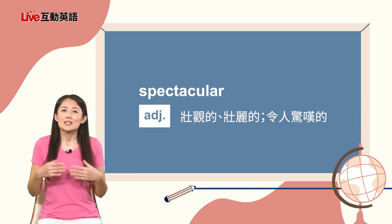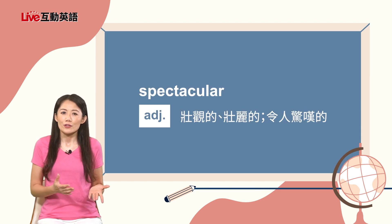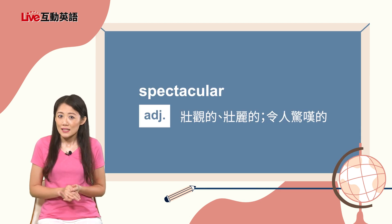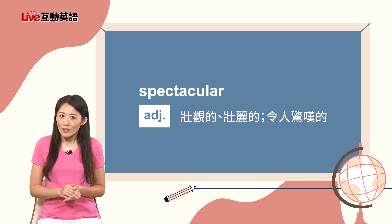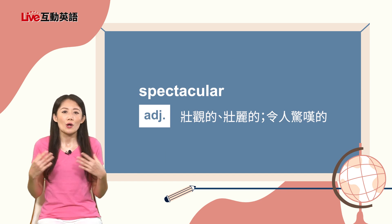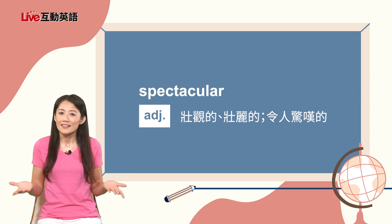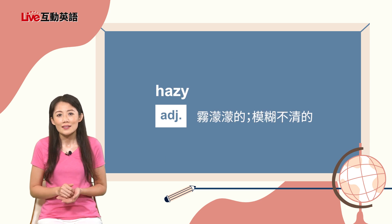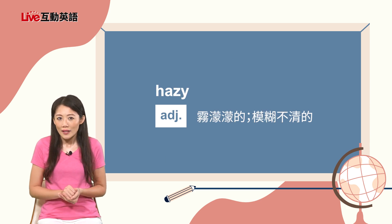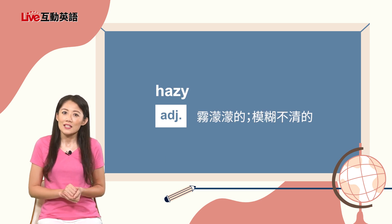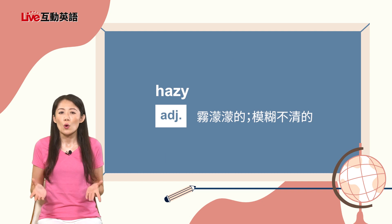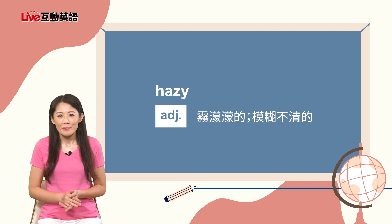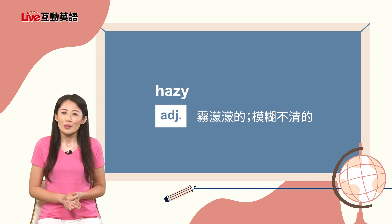老师还聊到他的家乡洛杉矶的日落，美得令人赞叹，可是看起来似乎有一点雾蒙蒙的。老师用到spectacular这个形容词，s-p-e-c-t-a-c-u-l-a-r，spectacular可以形容壮观的、壮丽的或令人惊叹的。他也用到hazy，h-a-z-y，hazy可以形容雾蒙蒙的或模糊不清的。